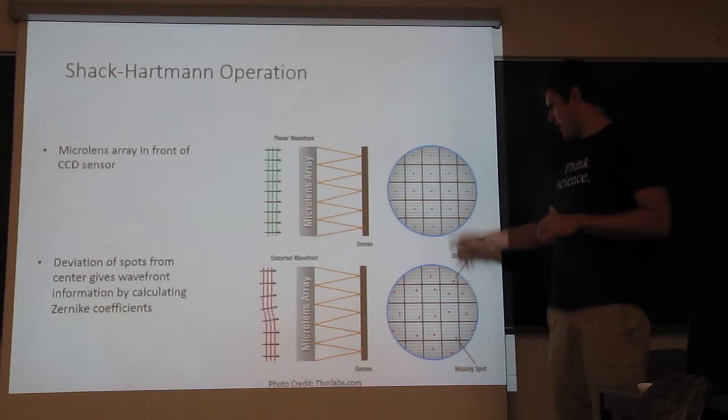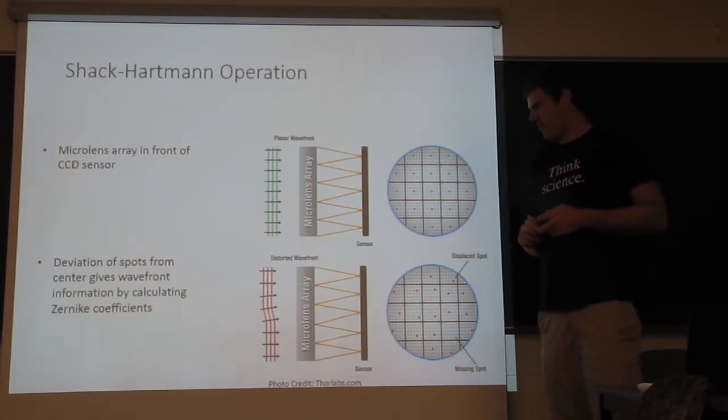And from this information, the deviation from the center, or the calibrated spot, is how the wavefront sensor calculates the Zernike coefficients.